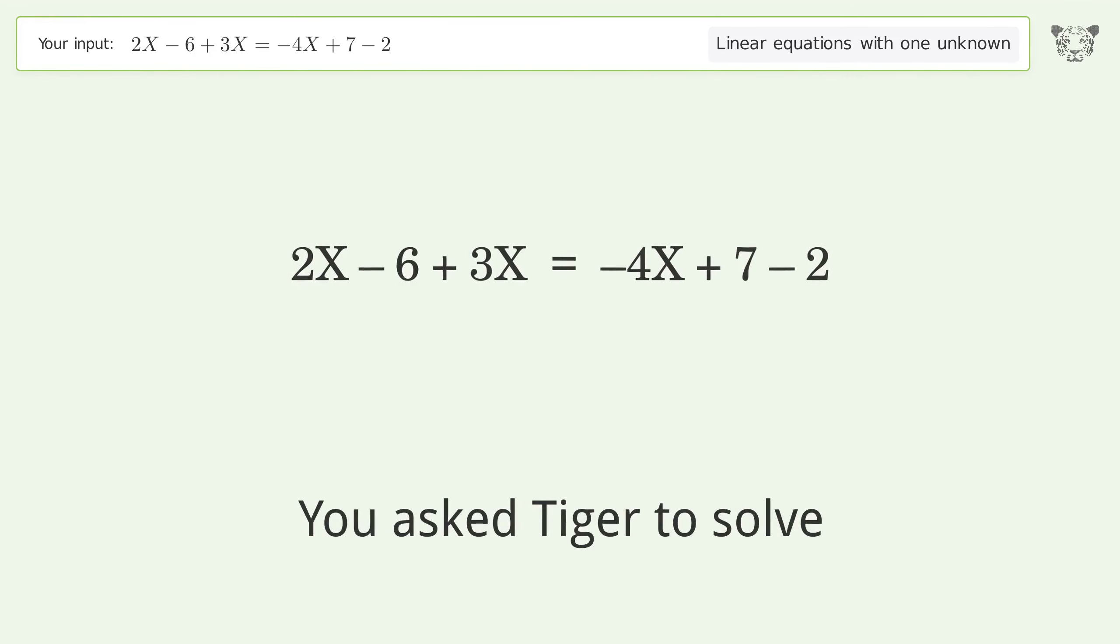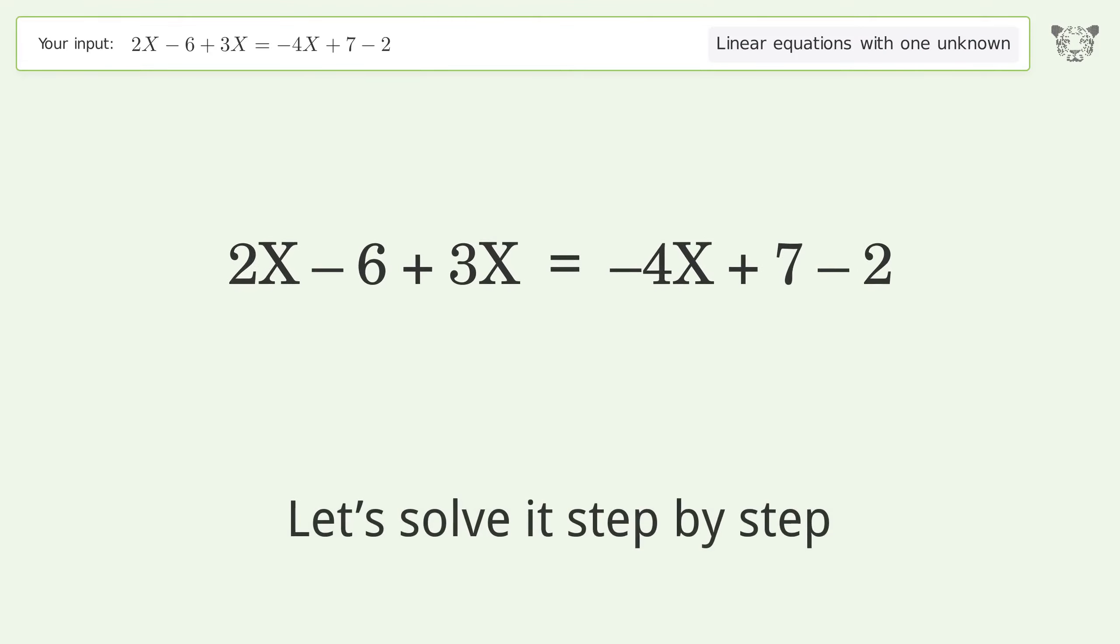You ask Tiger to solve this. This deals with linear equations with one unknown. The final result is X equals 11 over 9. Let's solve it step by step. Simplify the expression, group like terms.